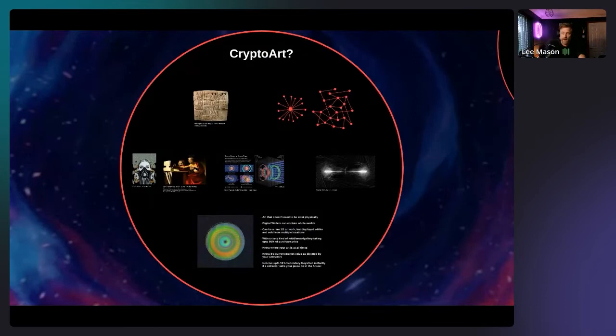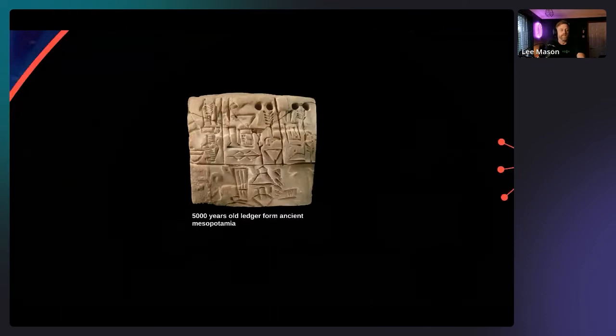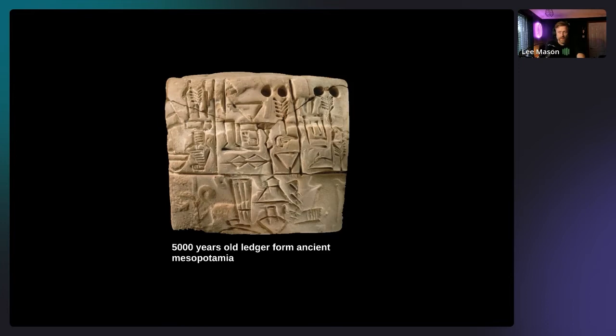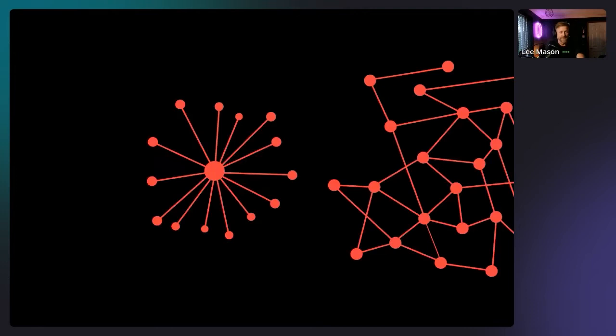NFT tokens can be attached to anything — cartoon profile pictures, in-game items, virtual real estate, even houses. I'll be focusing on art and specifically my own experience of the crypto art movement. Essentially what we're talking about is ledgers — ledgers have been around for 5,000 years, used to keep permanent records of ownership of non-transient assets like land or buildings. The blockchain is the modern equivalent: digital, but its strength comes from being decentralized and therefore not held on any single server, making it more or less impossible to delete.